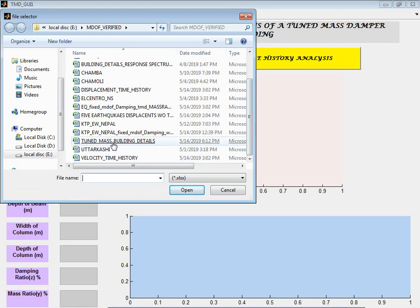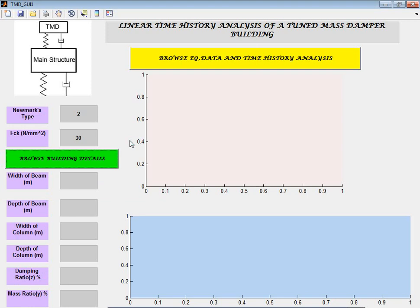Click on tuned mass building details. You have to type width of the beam - what is your width of the beam in meters? 0.25 meters and depth 0.25 meters.